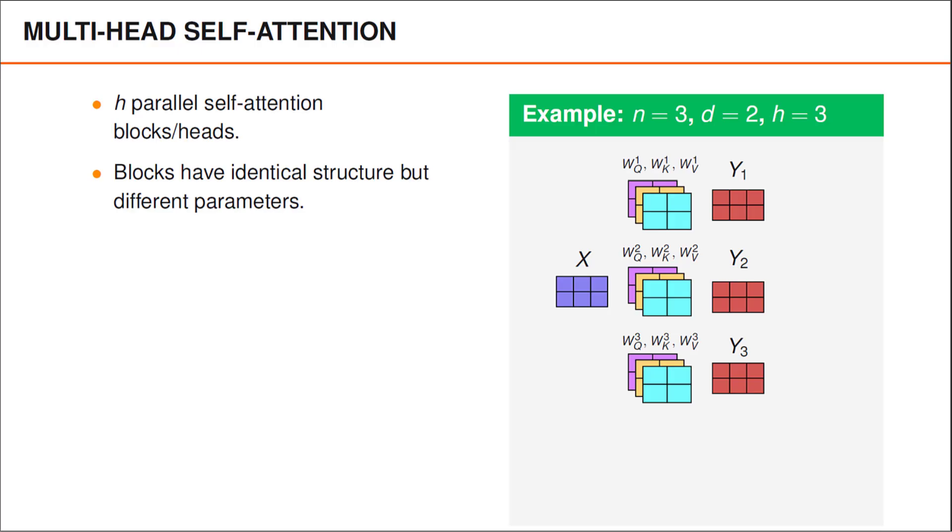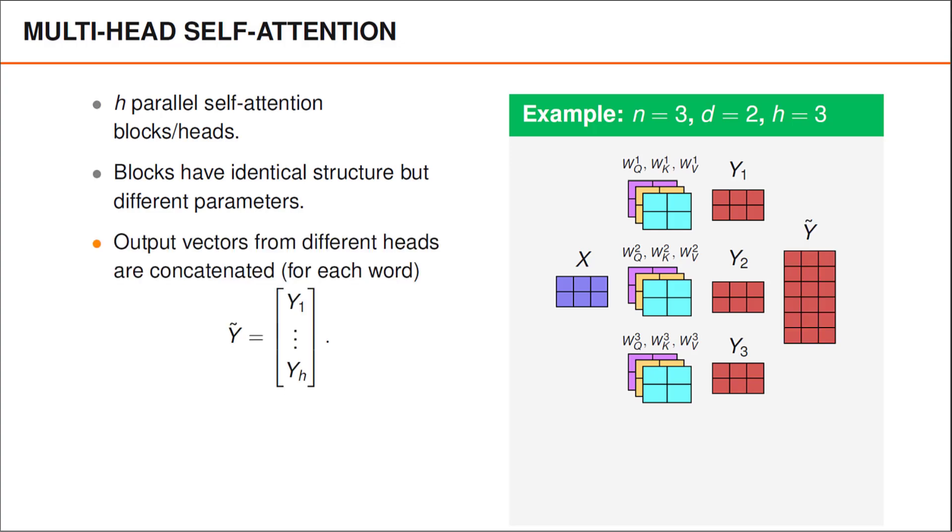Given these matrices, we can perform self-attention separately in each head, and this will give rise to h matrices with word embeddings. That is, for each input word, we now have h different word embeddings. These word embeddings are then concatenated, which gives rise to longer word embeddings, one for each word, and we use y tilde to denote a matrix that contains all the long word embeddings.